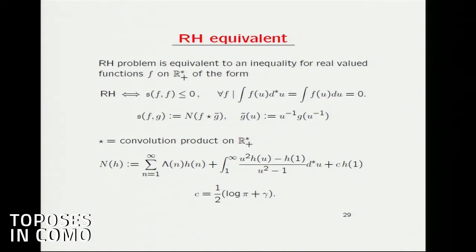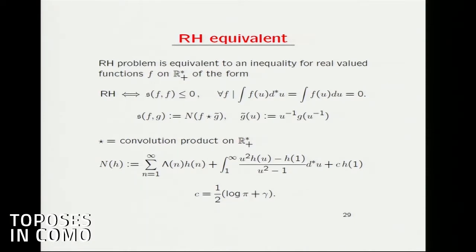The problem is that this distribution is very, very strange looking. There is a von Mangoldt function, and there is a constant in front of h of 1 because there is a finite value there. This constant is log of π and the Euler constant. So how are you going to deal with that until you have a better understanding of this formula?